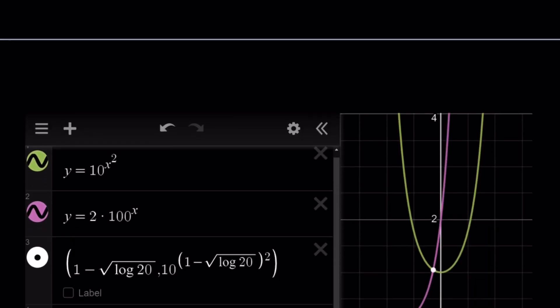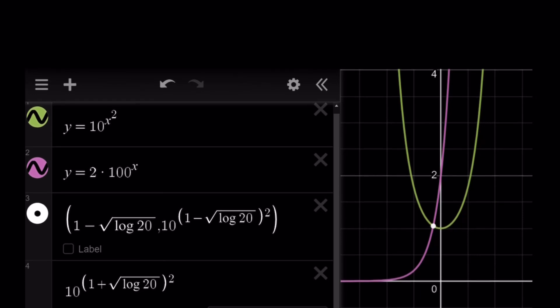So here's the graph of these two functions. y equals 10 to the power x squared and y equals 2 times 100 to the power x. Both of these are exponential functions. But the top one, the green one, is actually symmetrical with respect to the y-axis because x can be replaced with negative x and that's going to give us the same function or the same y values. That's why we have that symmetry. You can basically reflect it and you'll get the same shape.